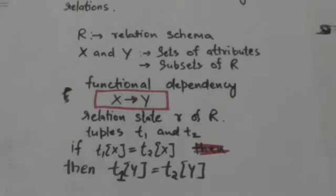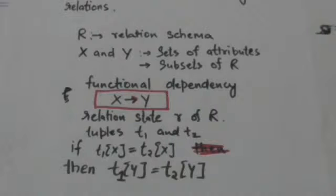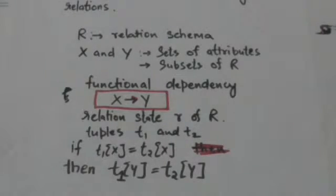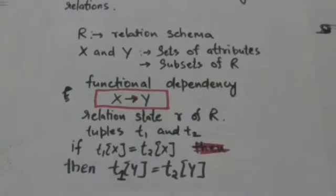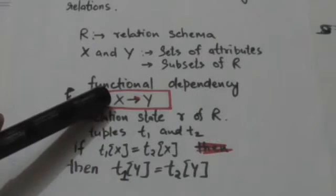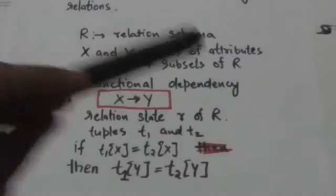Consider a relation schema R and two sets of attributes X and Y that are subsets of R. This functional dependency specifies a constraint on the possible tuples that can form a relation state r of R.